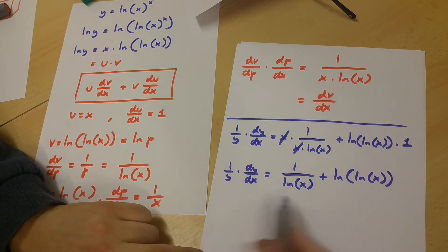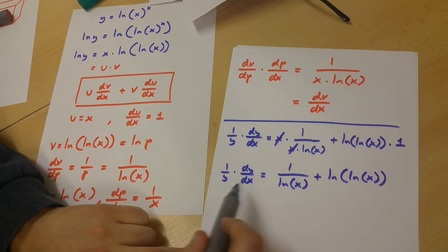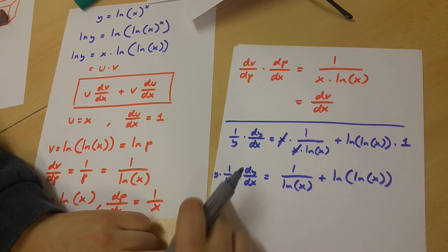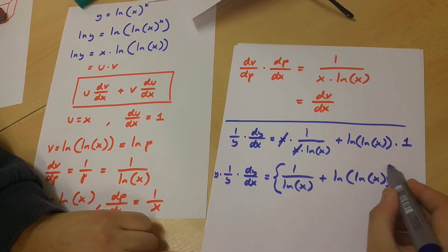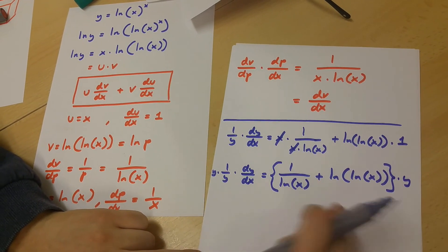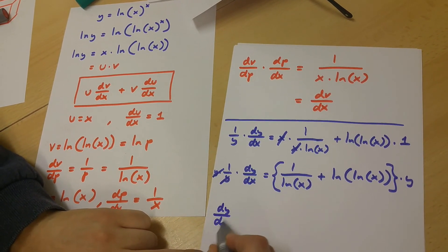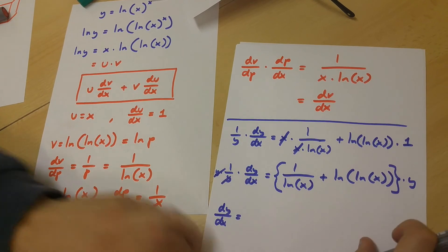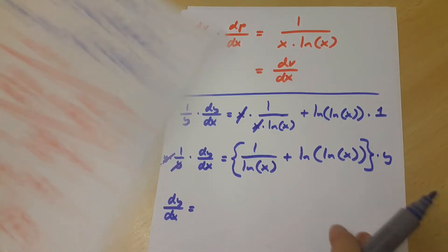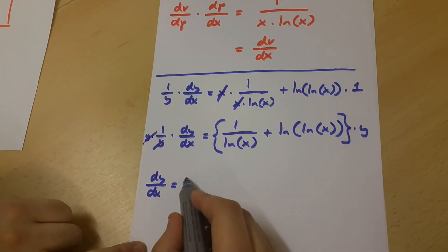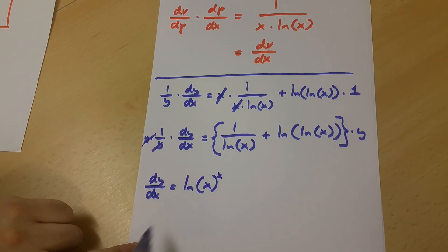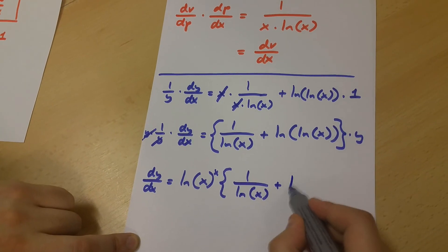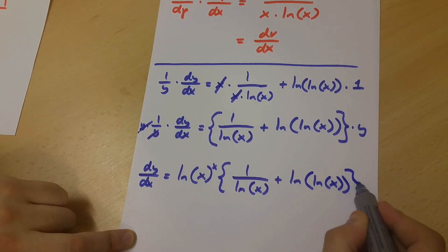We are going to multiply both sides of this equation by y so that we can isolate dy over dx. So we get dy over dx is equal to y multiplied by the value inside these brackets. But what is y? Well, y is ln x to the power of x. So we get dy over dx is equal to ln x to the power of x, times 1 over ln x plus ln ln x, in brackets.